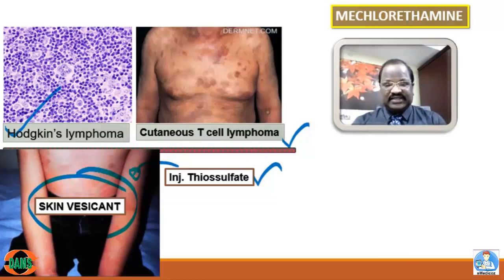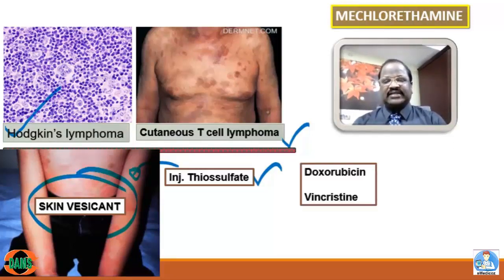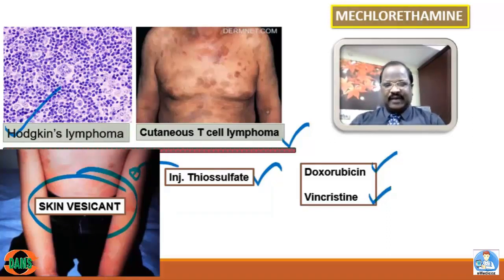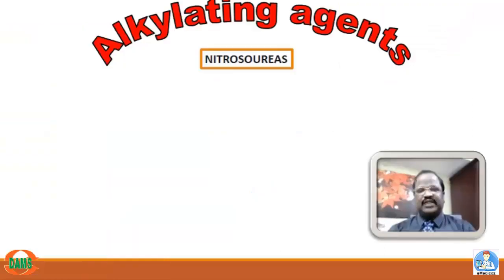Other anti-cancer drugs also causing vesication include doxorubicin. So vesication is a side effect of mechlorethamine and doxorubicin. Now, another group of alkylating agents are the nitrosoureas.